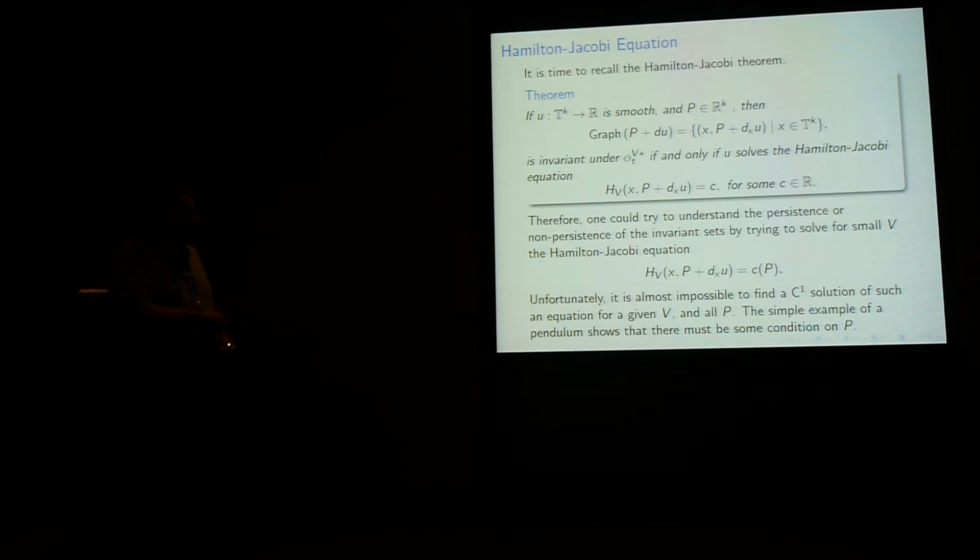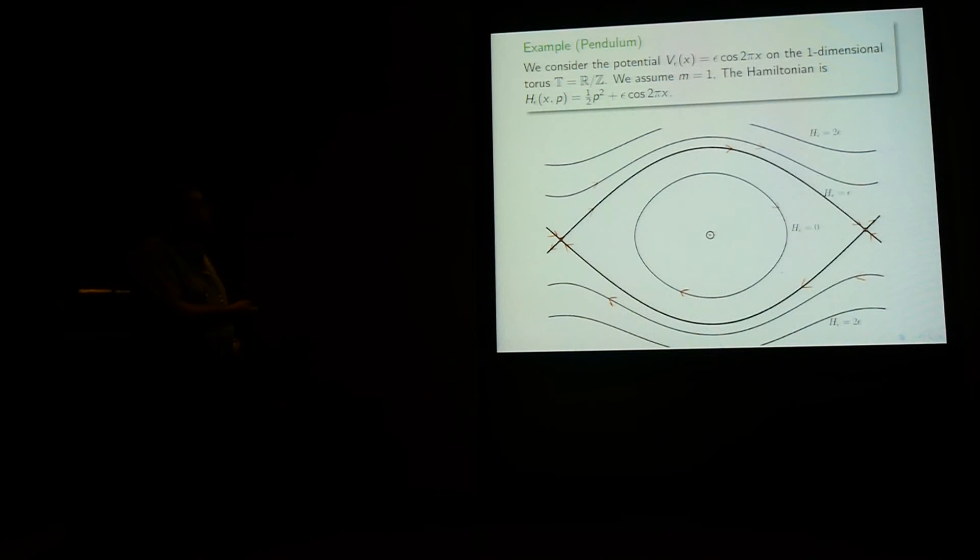Unfortunately, it's almost impossible to find a C¹ solution for such an equation for a given v and all P. So I'm going to give you the simple example of a pendulum to try to explain the situation. So the pendulum, here is the potential. I will put a small epsilon in front of it to show that what I say, you can make the perturbation as small as you want. You will just get the same formula. So it's on the one-dimensional torus. And I'm assuming mass equal to 1. So the Hamiltonian is given by h_epsilon of xp is one half of p squared. And here I don't put the absolute value, of course. It's a real number. So most of the time, if I put the absolute value, people tell me why do you put it. It's one-dimensional. If I don't put it, then they tell me why you don't put it. So I always say I put it and I don't put it. The way you want.